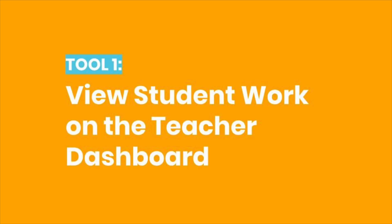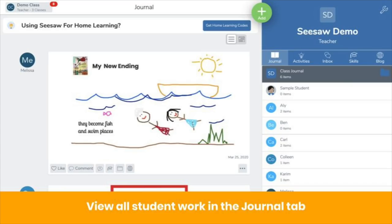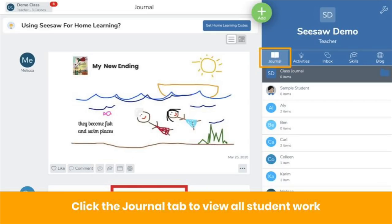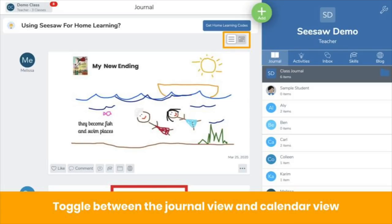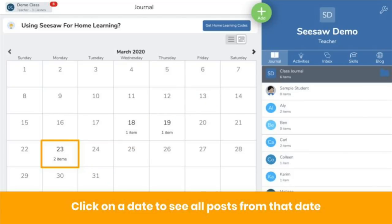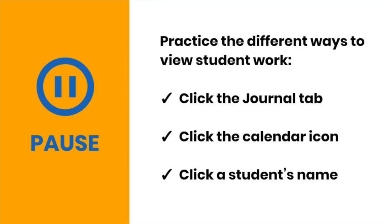When your students start to add to their journal, you can view their work in a few ways. First is the Journal tab — this is where you'll find all posts by all students in the order they're posted. You can toggle between the journal view and the calendar view. Click on the calendar icon if you want to view posts from a specific date. You can also view work by an individual student by clicking on a student's name. Pause the video now to practice viewing work in multiple ways.